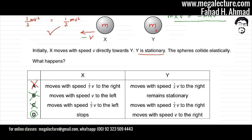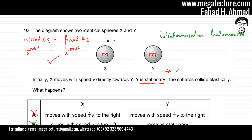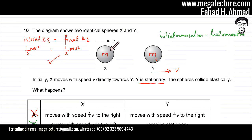That leaves option D, which is the correct answer. Option D says that after the collision, X stops and Y moves with speed V to the right. Initially X had KE of half M V squared. After collision, X is stationary with zero KE and Y travels with KE of half M V squared — so kinetic energy is conserved.